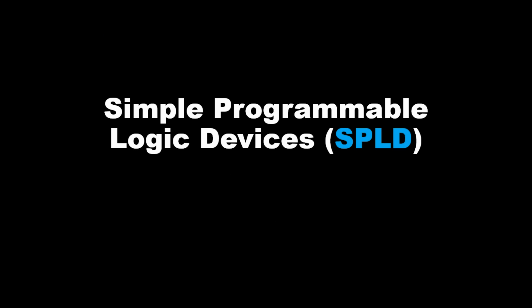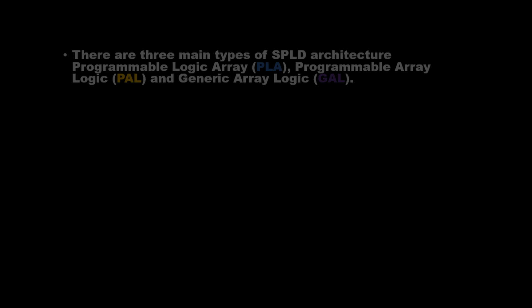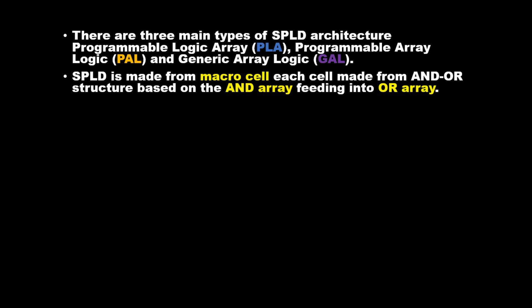There are three main types of SPLD architecture: Programmable Logic Array (PLA), Programmable Array Logic (PAL), and Generic Array Logic (GAL). SPLDs are made from macro cells, each cell made from an OR structure based on the AND array feeding into an OR array.